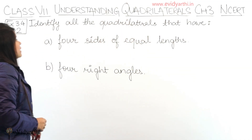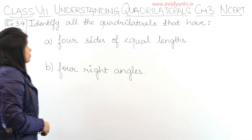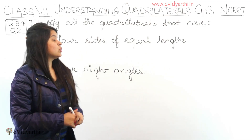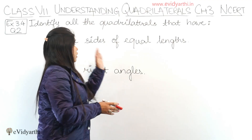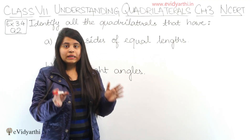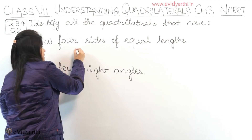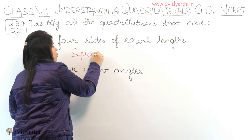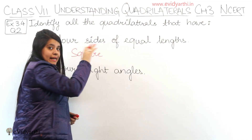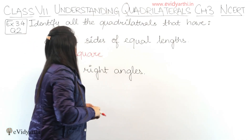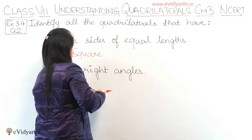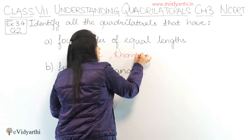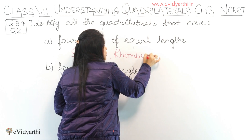Identify all the quadrilaterals that have 4 sides of equal length. So which quadrilaterals have 4 sides of equal length? The first and very simple one is the square — we know that all sides of a square are equal. Similarly, along with square, there is also rhombus — all sides of a rhombus are also equal.